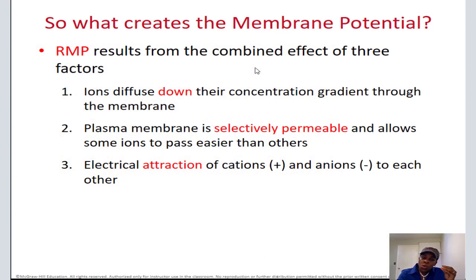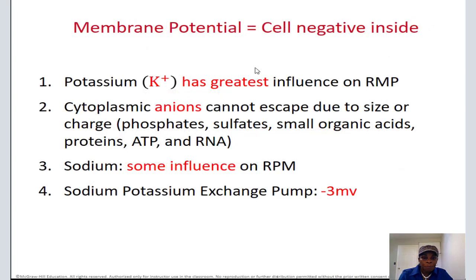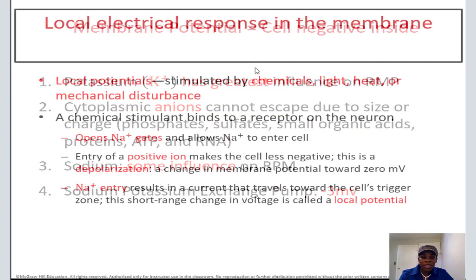Why, at rest, is there a membrane potential? It's the power that these ions have due to their high concentration pushing against the other side that has low concentration. Also, the attraction between the negative inside and the positive outside creates pressure on the membrane — that's membrane potential, which is just membrane power. Which ion has the greatest effect on the membrane potential? It is potassium, because it's 40 times more concentrated inside, creating more pressure. Sodium has some influence too. The pump — which moves three sodium out and two potassium in — contributes about three millivolts out of the 70 millivolts. It's not a lot, but it's very important.